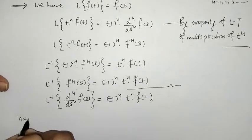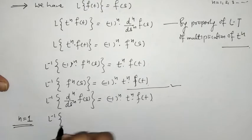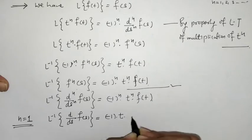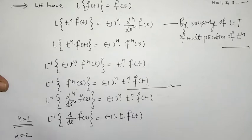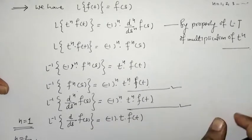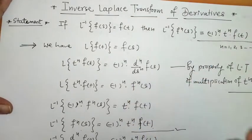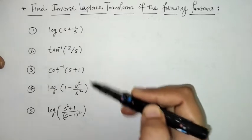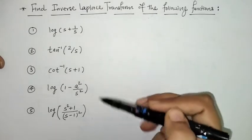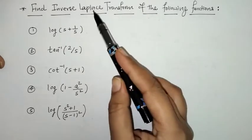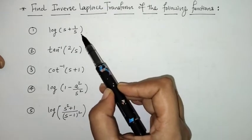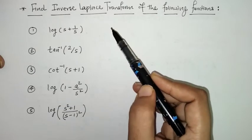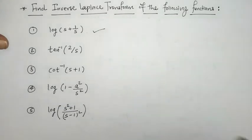For n=1, L-inverse of d/ds of F(s) equals -t times f(t). Similarly for n=2 we can write the corresponding result. This proves the property of inverse Laplace transform of derivative. Now we will discuss some examples. When we have such special functions and need to find the inverse Laplace, we first differentiate to convert to an algebraic function and then apply this property.